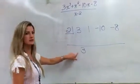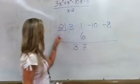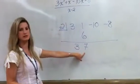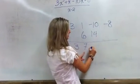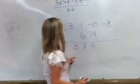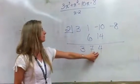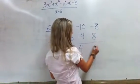So 2 times 3 is 6, we put it here. 1 plus 6 is 7, good. 2 times 7 is 14, we put it here. Negative 10 plus 14 is positive 4, sorry. And then 2 times 4 is 8. And negative 8 plus positive 8 is 0.